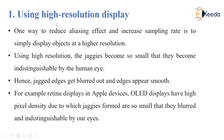The first method is using a high-resolution display. One way to reduce the aliasing effect and increase the sampling rate is to simply display the object at higher resolution. If we use higher resolution for the object, the aliasing effect will be reduced. Using high resolution, jaggies become so small that we cannot notice them — they become indistinguishable by the human eye. We cannot normally see those jaggies if we use high resolution. Hence, jagged edges get blurred out and edges appear smooth.